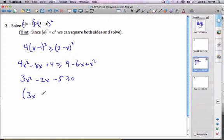Factor this bad boy here, I get 3x minus 5, x plus 1 works out nicely. And then I make my line. Here is negative 1, here is 5 thirds.